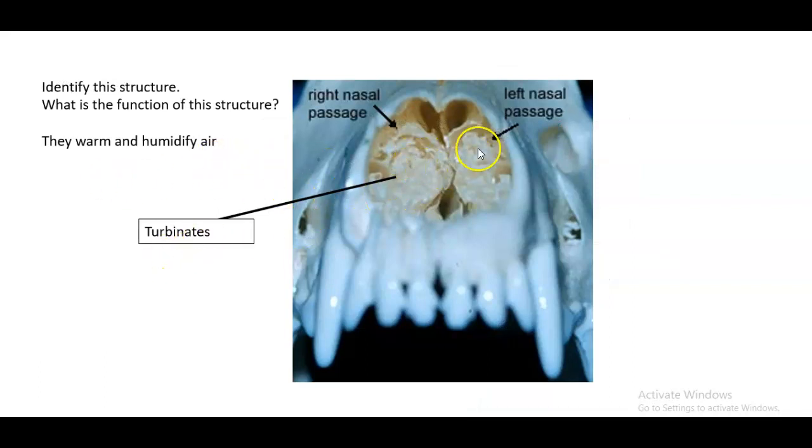Okay, so this structure here, those are turbinates. And if you recall, those are those very, very thin scroll-like bones within the nasal passage. And they are covered in a nice mucous membrane covering, so a nice mucosa essentially. And the purpose is that they warm and humidify air as it works its way in through the respiratory tract.